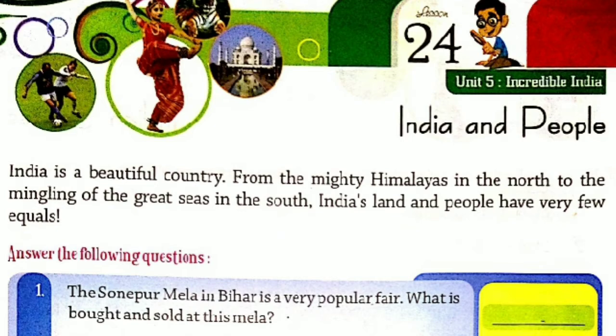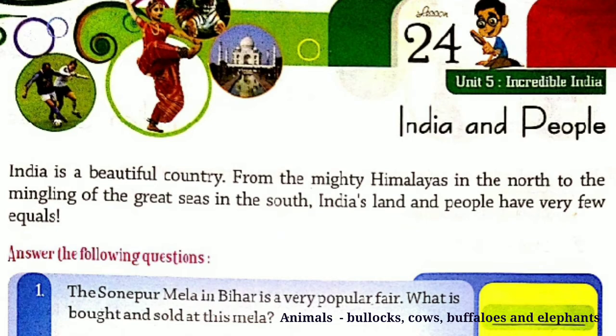Question number one: The Sonepur Mela in Bihar is a very popular fair. बिहार का सोनपुर मेला बहुत प्रसिद्ध है। What is brought and sold at this मेला? इस मेले में क्या चीज़ खरीदी और बेची जाती है? इसका आंसर होगा — animals: bullocks, cows, buffaloes and elephants.